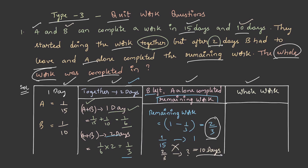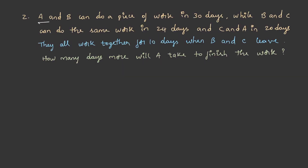For the first two days, both A and B worked together. After two days, A alone completed the remaining work, which took 10 days. So the total time for the whole work is 10 plus 2, that is 12 days. Now, the second problem: A and B can do a piece of work in 30 days, while B and C can do the same work in 24 days, and C and A in 20 days.